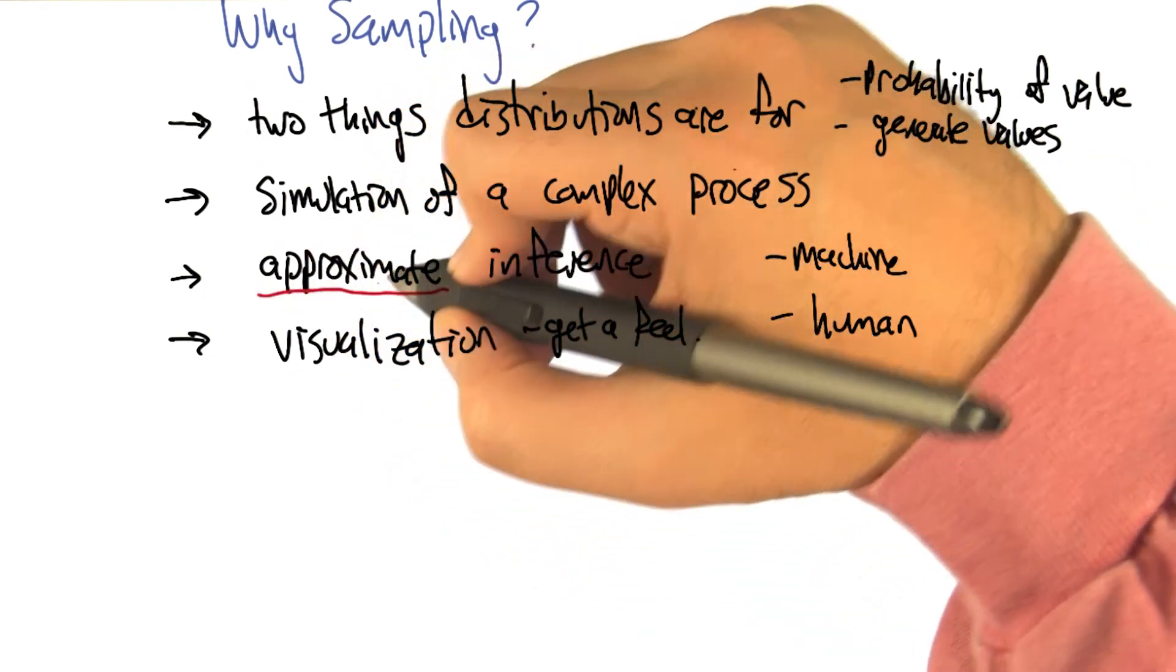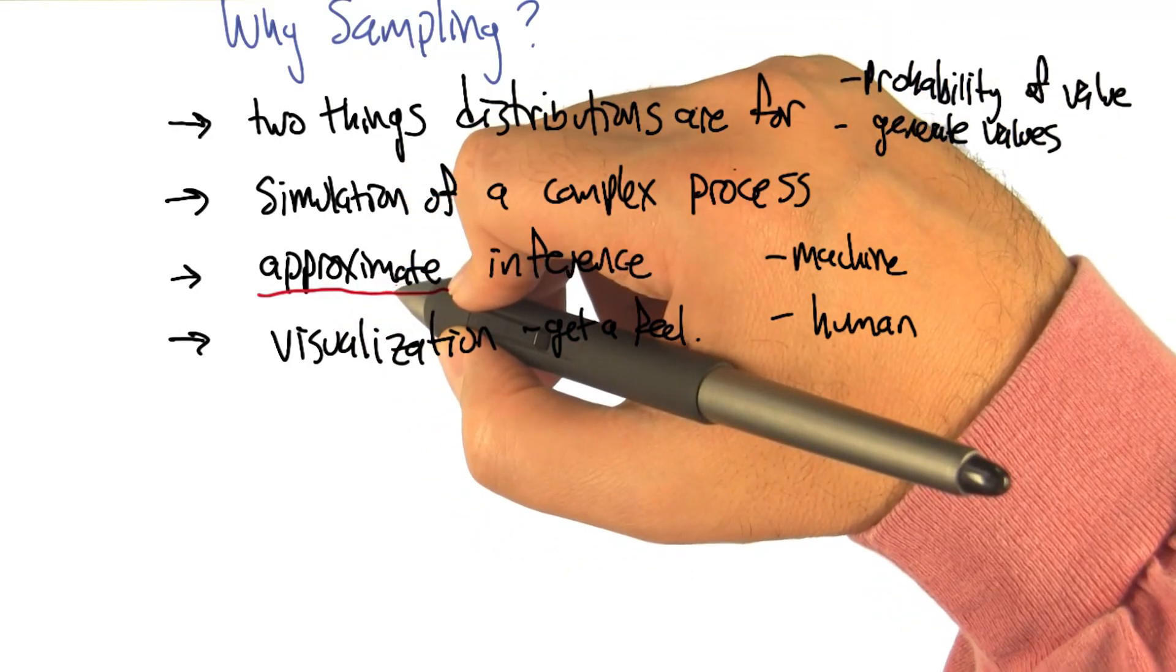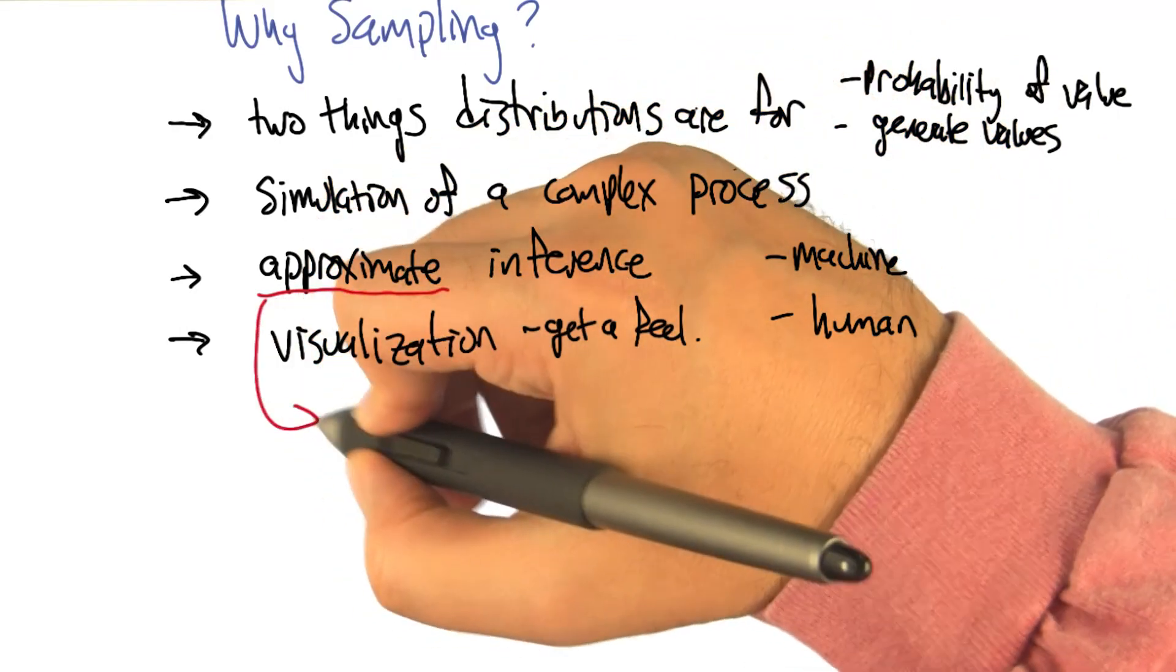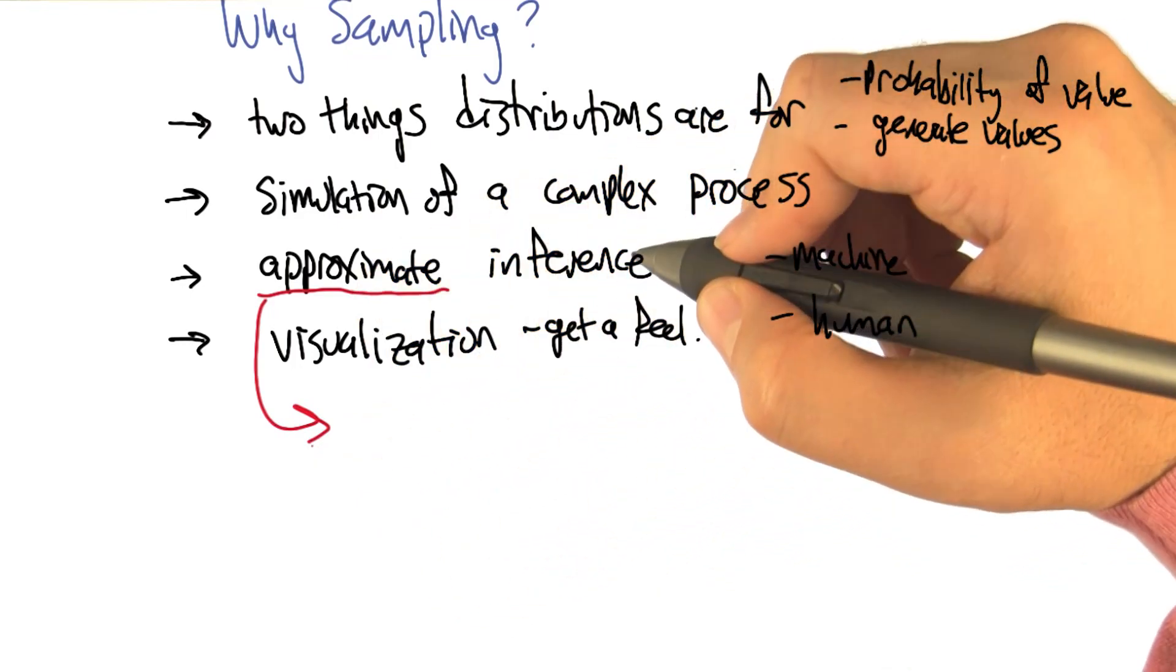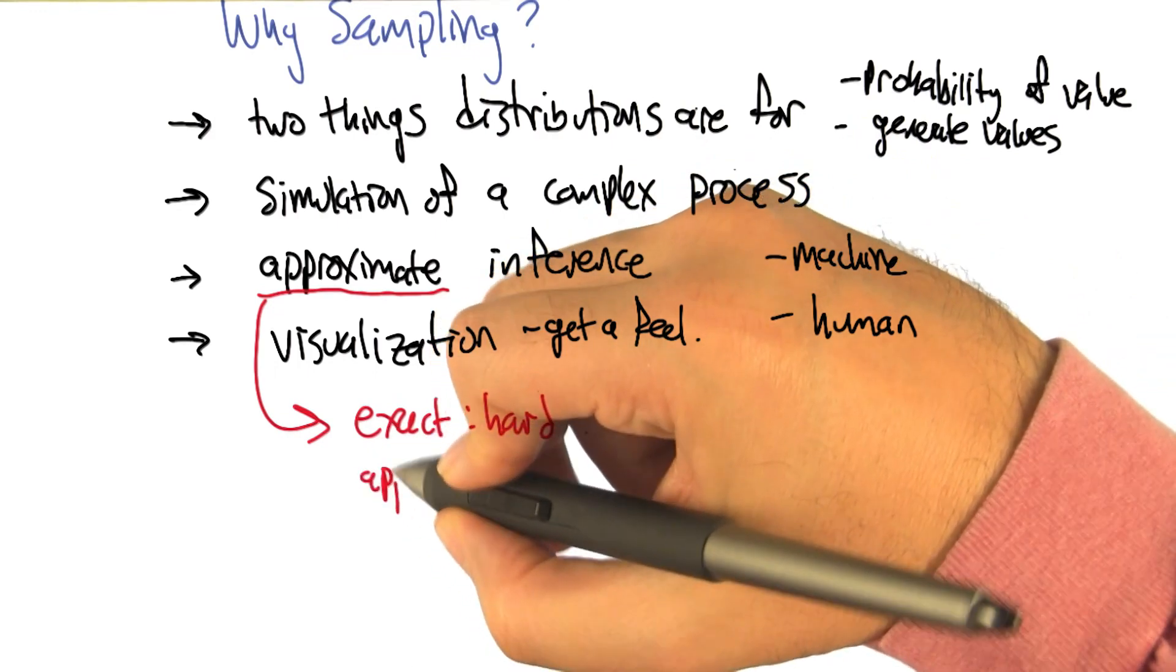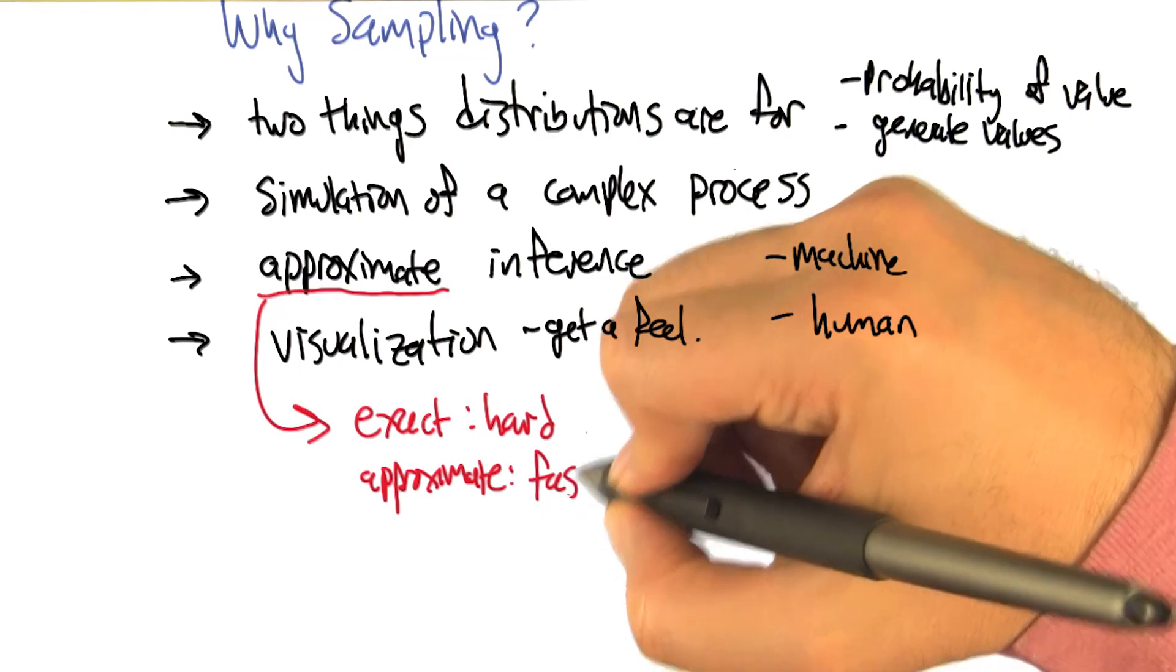Okay. I want to draw your attention to this word here for a moment. This notion of approximate inference. Now, generally, we don't like approximations when we can do things exactly. So why are we not doing things exactly? Because it's hard? It's hard. That's exactly right. So, or even if it weren't hard, it might, it may be in some cases faster.